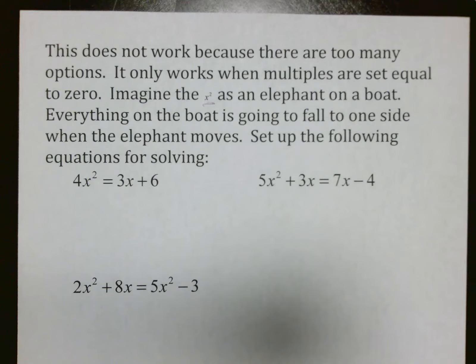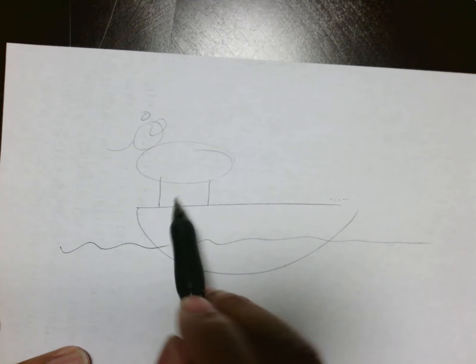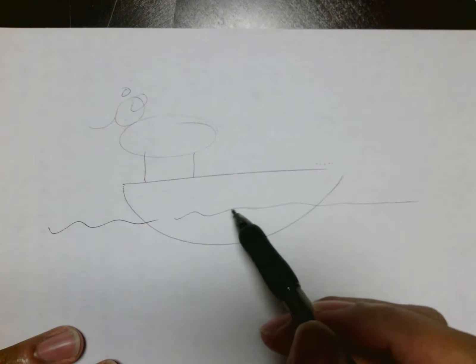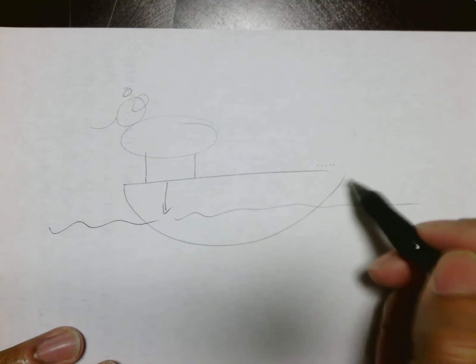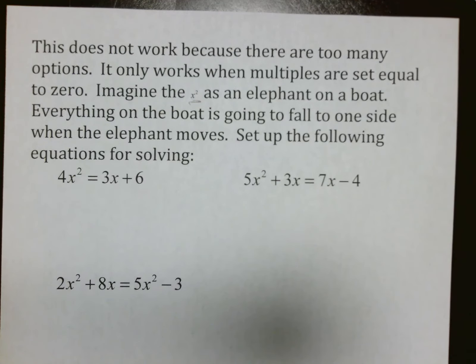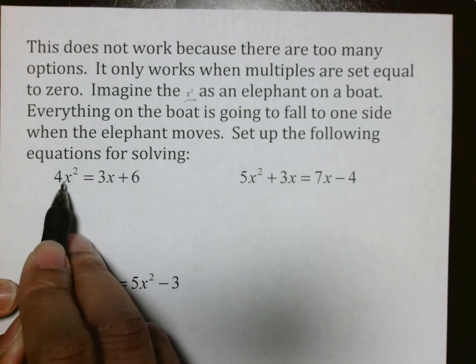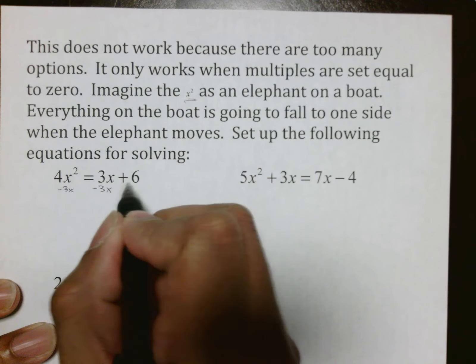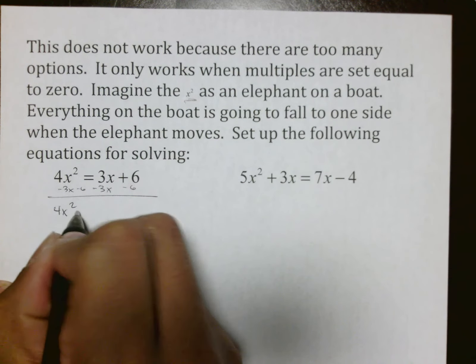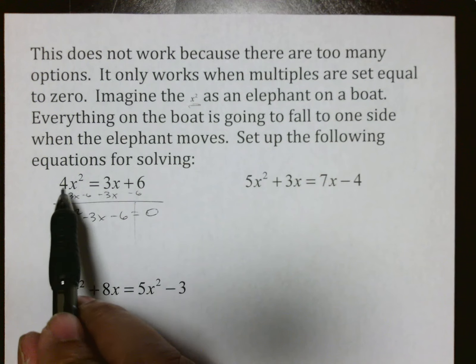Imagine x² as an elephant on a boat. If the elephant is standing on the boat and it's the biggest thing on the boat, the boat is going to tip toward the elephant, and everything is going to fall that way. So whenever you're solving, anytime you have to solve, imagine x² as an elephant — everything is going to fall to one side, where x² is. That means you must move all other terms to that side to set the equation equal to 0.